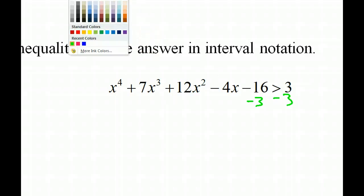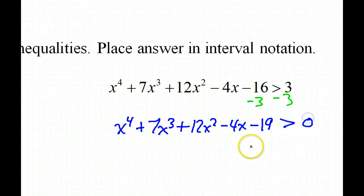Okay, so we get zero over there. Now, we will have x^4 + 7x^3 + 12x^2 - 4x - 19 is greater than zero.